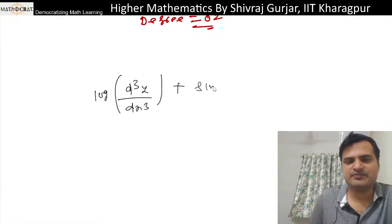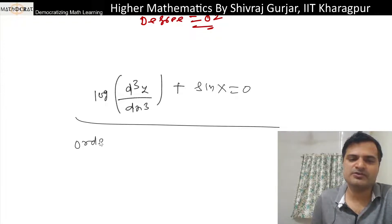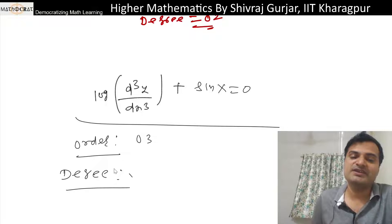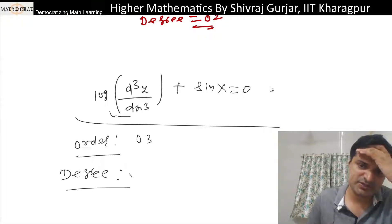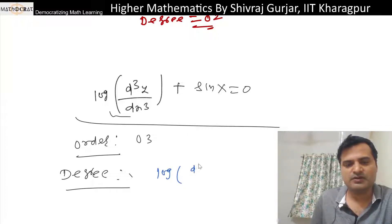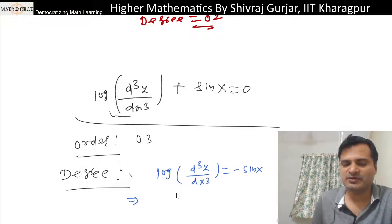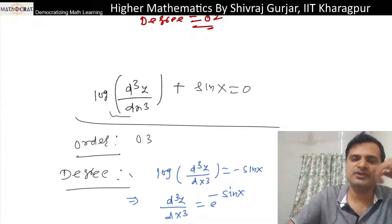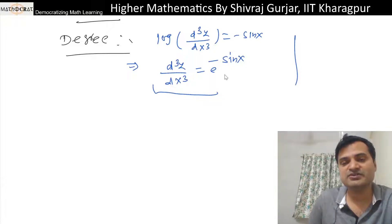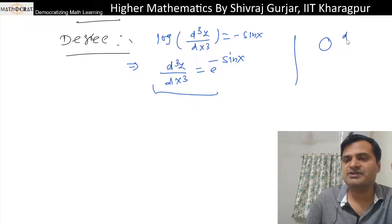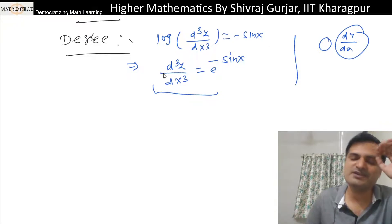Another type of example: (d³y/dx³) + (dy/dx) + sin(x) = 0. Here we ask: does the degree exist? First, the order is 3. For degree, we check if the differential operators can be put in polynomial form. The sin(x) here is a function of x only, not of the derivative — so it does not affect the polynomial form of the differential operators. The degree is therefore defined.